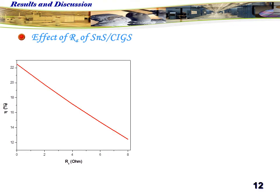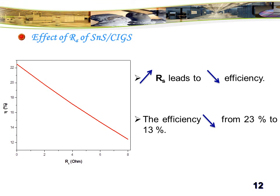Finally, the effect of series resistance. We observed that the increase of series resistance leads to decrease of efficiency. The efficiency drops from 23% to 13%.